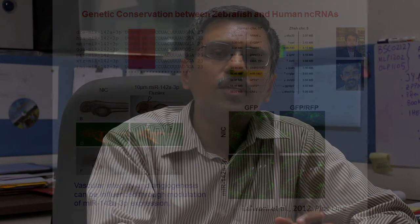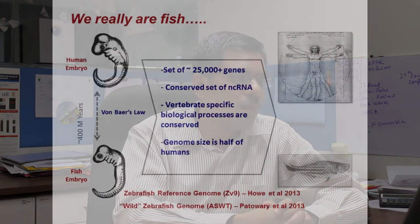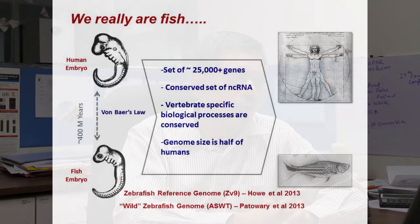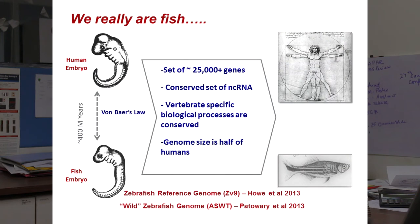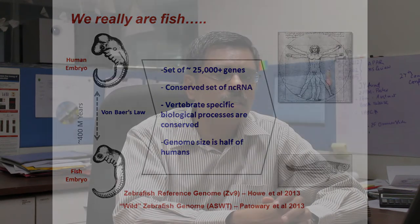All of this leads to one conclusion: we are able to do this modeling because humans really do incorporate some amount of fish in us. As aptly described by one law, in spite of the 400 million years of evolutionary distance between fish and human, we share a conserved set of about 25,000 protein-coding genes, conserved non-coding RNAs, and vertebrate-specific biological processes — all completely conserved — allowing us to model between humans and zebrafish.